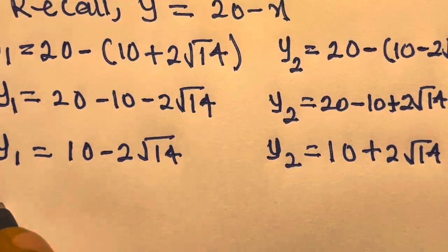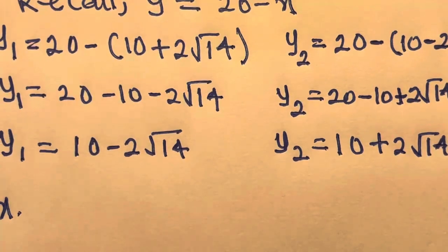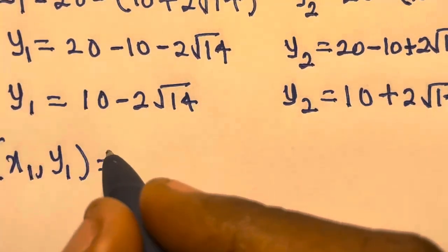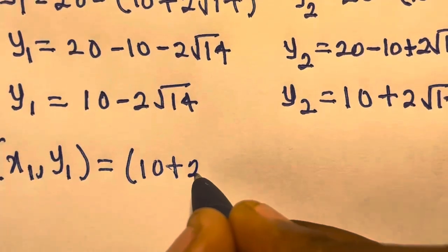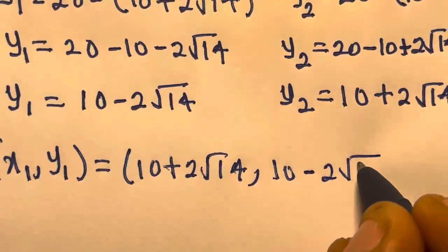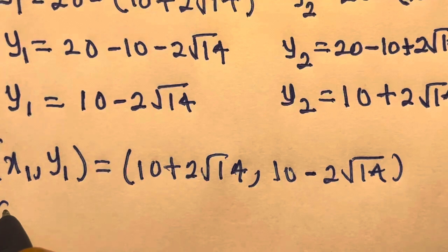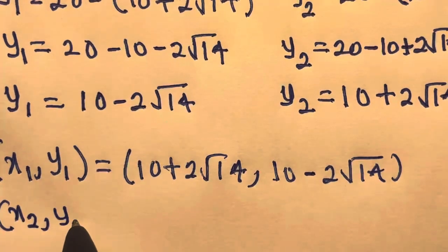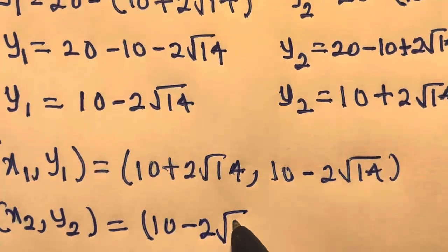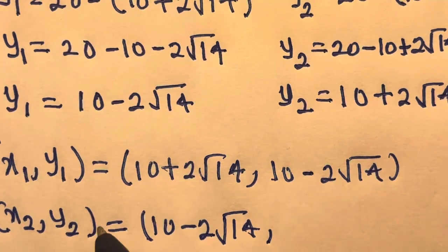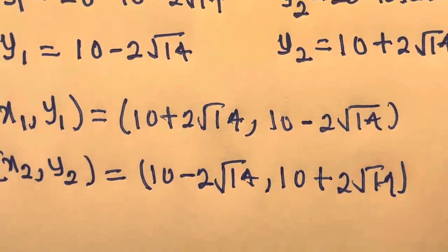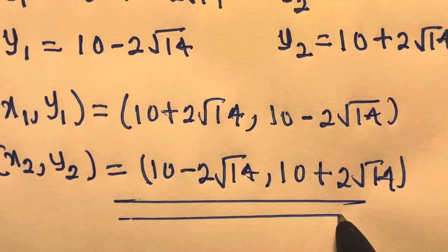So you can just combine the pairs. Therefore, our first pair, x1 and y1, is: x1 equals 10 plus 2 root of 14, and y1 equals 10 minus 2 root of 14. Also, for the second pair, x2 and y2: x2 equals 10 minus 2 root of 14, and y2 equals 10 plus 2 root of 14. So this is our answer.